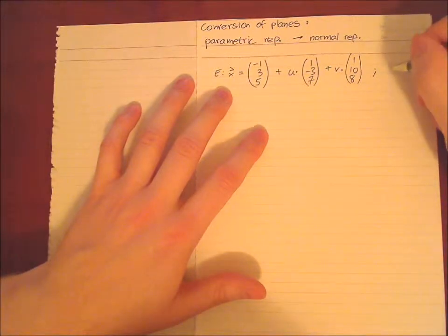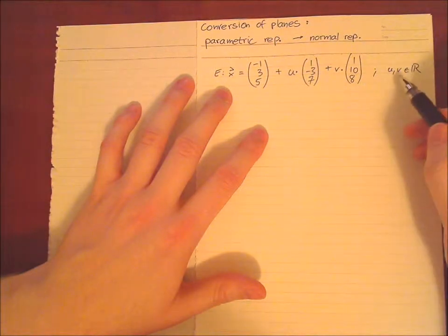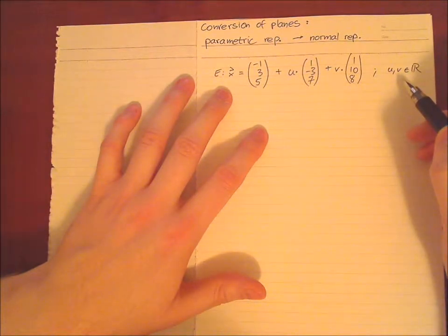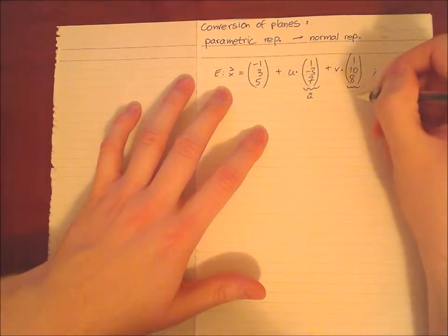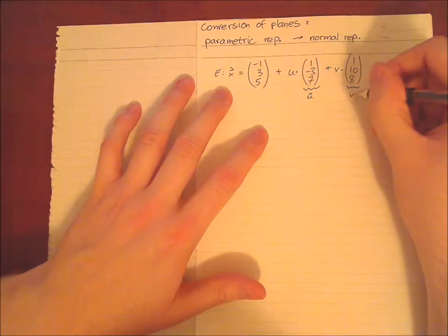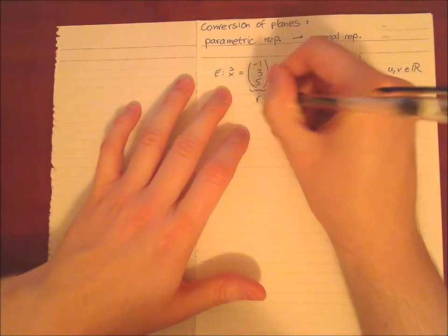And please note that u and v are both element of R, so both are just some sort of numbers and not vectors. The vectors are however this one I call u, and this vector is also a vector called v. This is a support vector, and I just call it p.